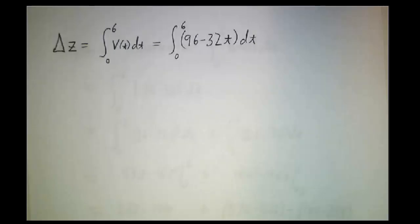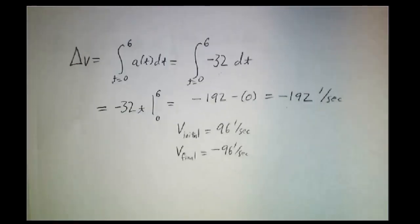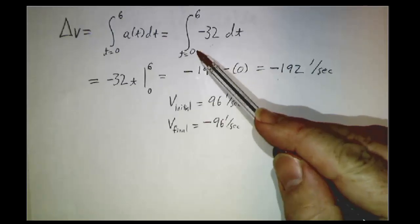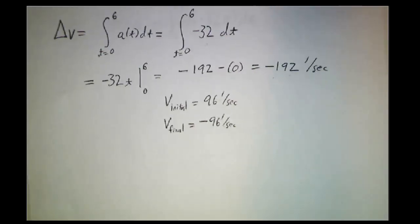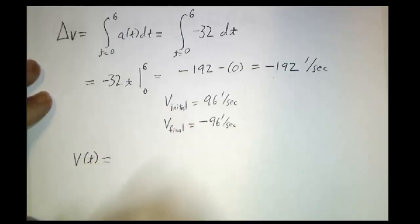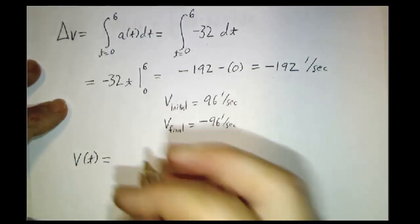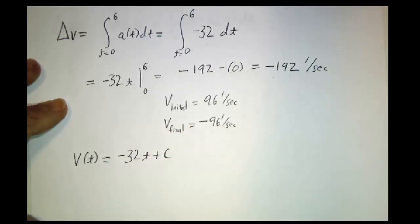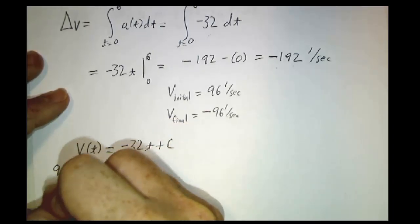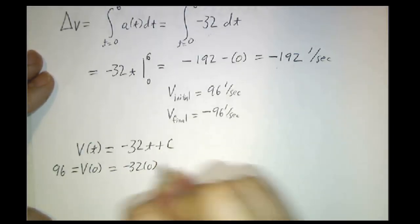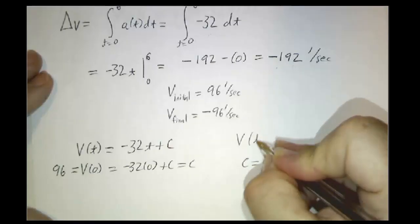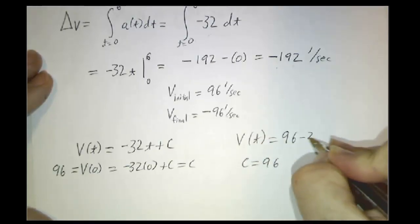Now we want the change in position, but first we need to know what the velocity function is. To find the change in velocity we used a definite integral; to find the velocity itself we need an antiderivative, or indefinite integral. The velocity at time t is a function whose derivative is negative 32, so it's negative 32t plus a constant C. Plugging in t = 0, the velocity was 96, so 96 = negative 32(0) + C, giving C = 96. Therefore, the velocity at time t is 96 minus 32t.